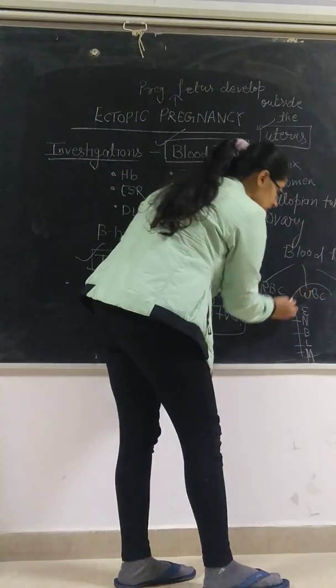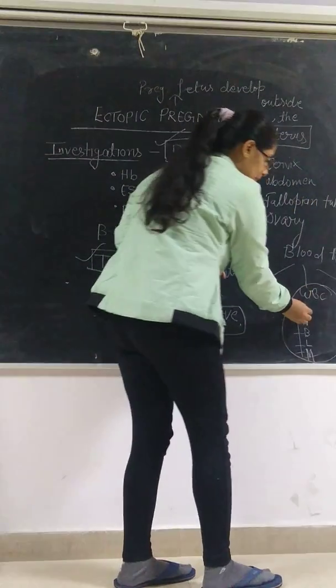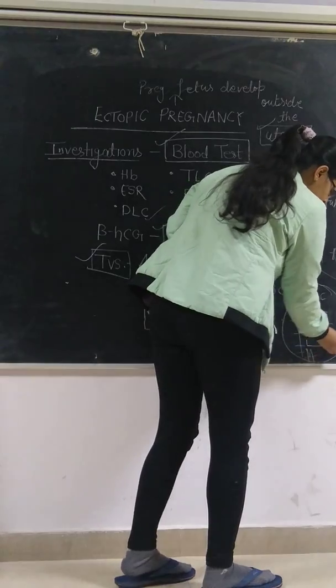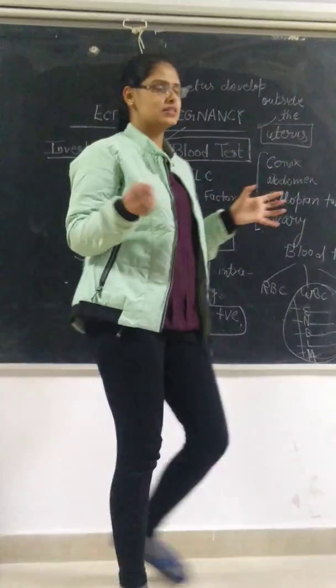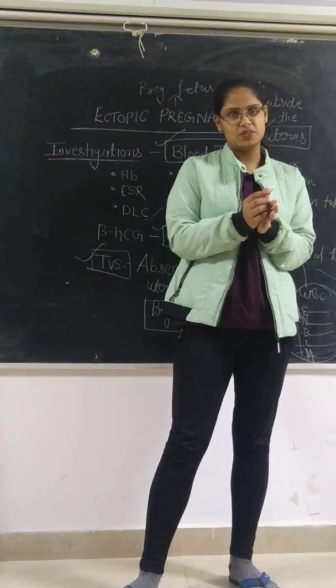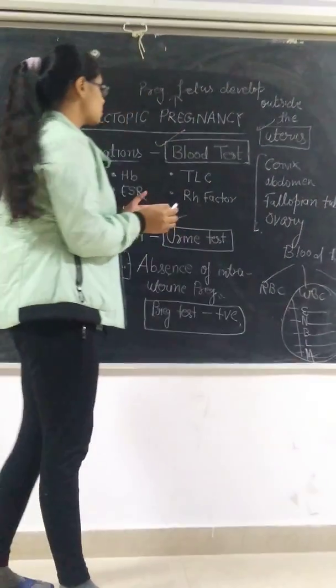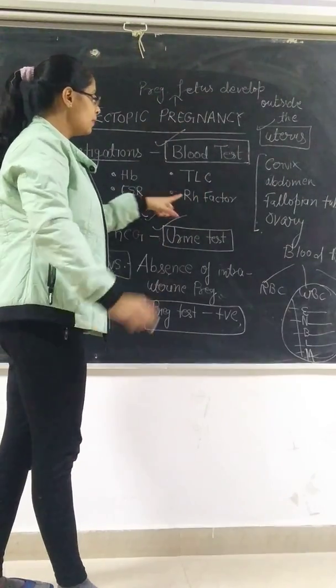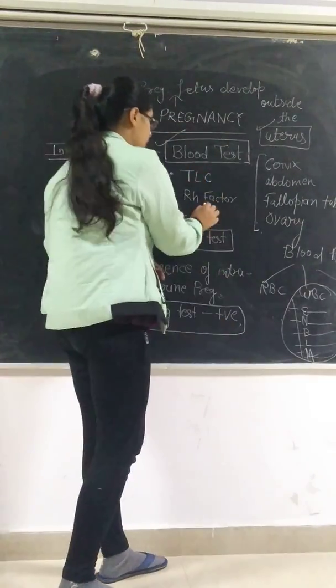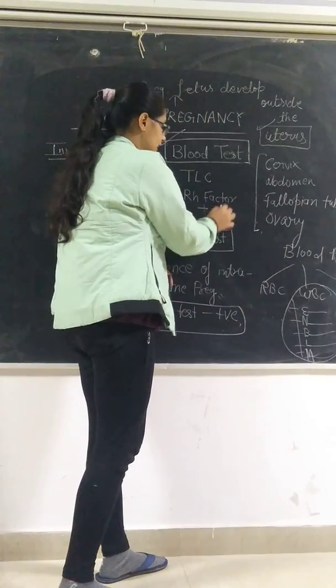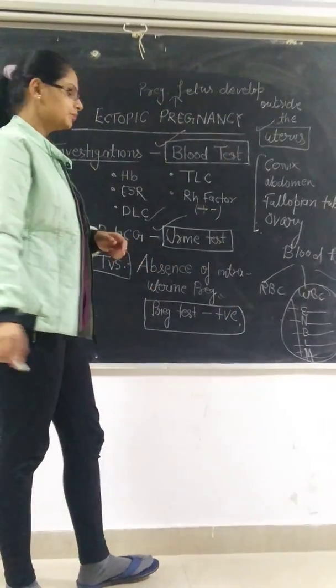Then DLC and TLC, which is total leukocyte count. We have all the WBCs in the body - eosinophil, neutrophil, basophil, lymphocyte, monocyte - all of them together. We are looking at TLC and RH factor, whether the lady is positive or negative.